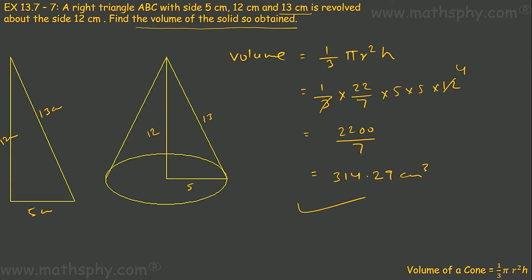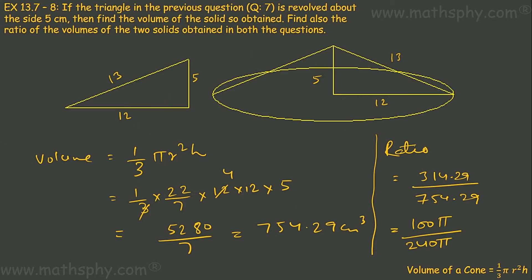Same I can do here. 22/7 I take as π, so 5 × 5 × 4 gives me 100. So in place of 314.29 cm³ I can write 100π cm³. So this would be 314.29 would be 100π, 754.29 would be 240π. So this becomes π/2π cancelled.